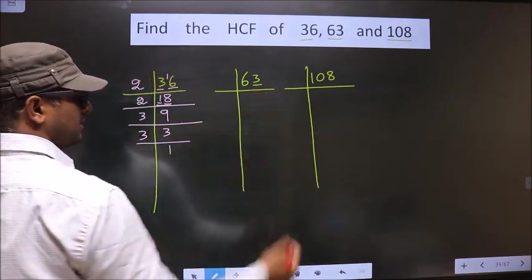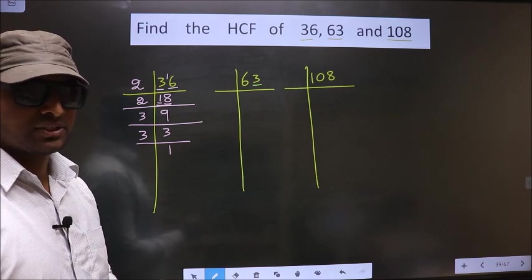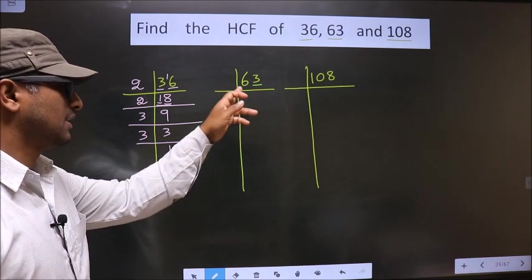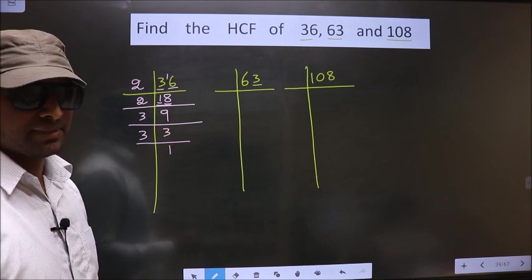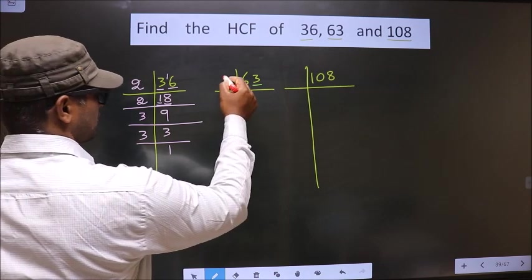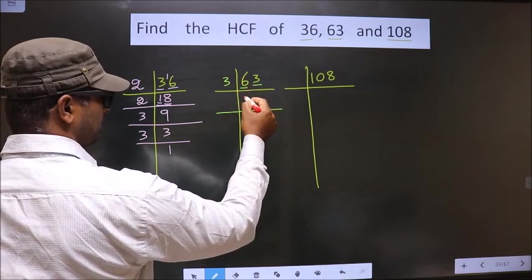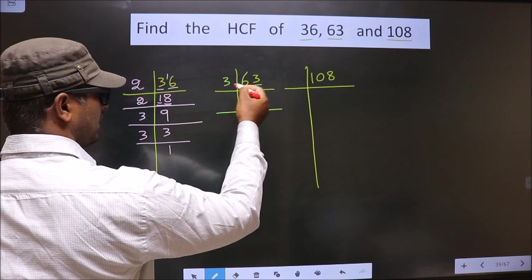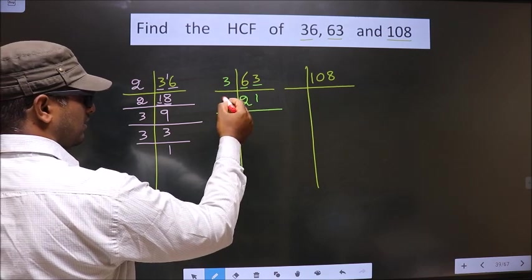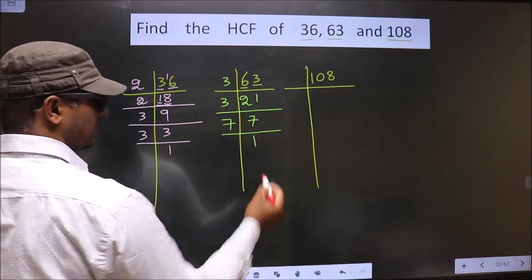The last digit is 3, which is not even, so this is not divisible by 2. The next prime number is 3. To check divisibility by 3, we add the digits: 6 plus 3 equals 9. Is 9 divisible by 3? Yes. So this number is also divisible by 3. So we take 3 here. First number is 6 — in the 3 table, 3 twos is 6. Next number is 3 — 3 ones is 3. Now we have 21. 21 is nothing but 3 sevens. Now 7 is a prime number, so we take 7 and 1.